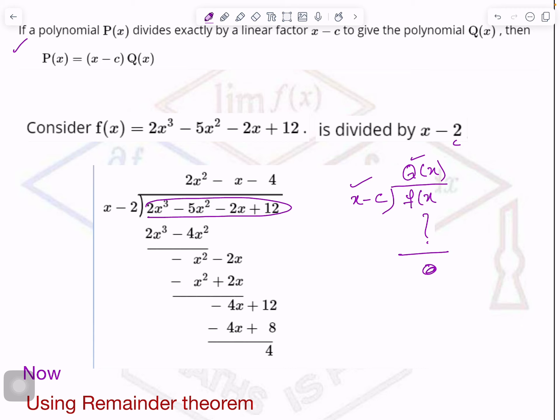But if remainder is not 0 and you have some number like here, then these are not your factors. So this is the difference between remainder and factor theorem. The remainder will be 0 or it will not be 0.